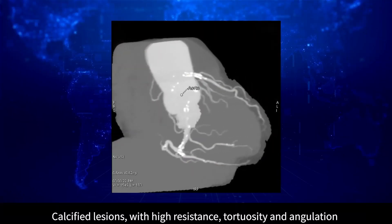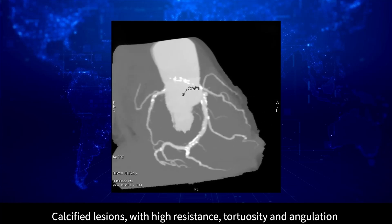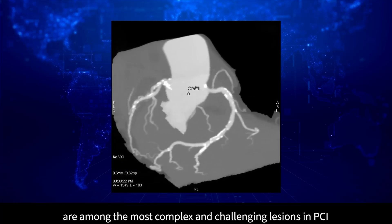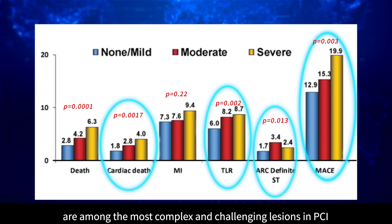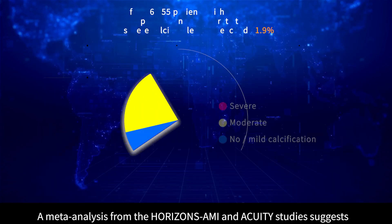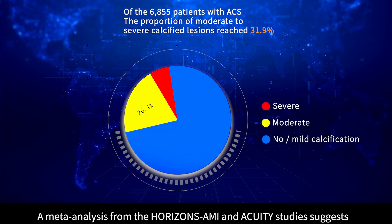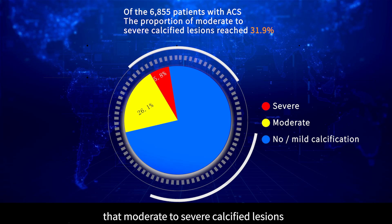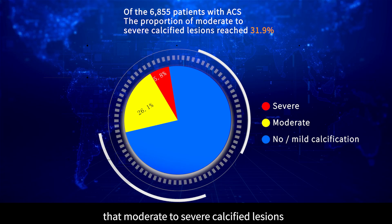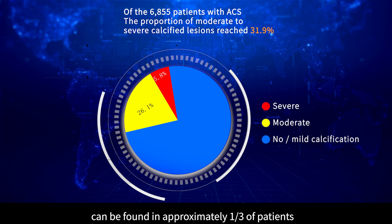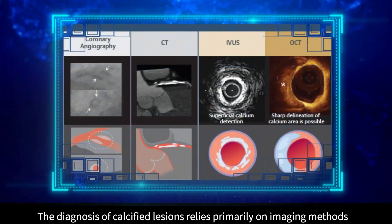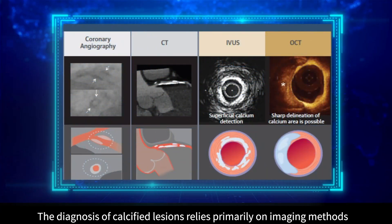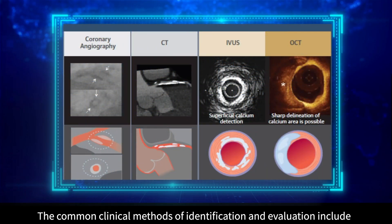Calcified lesions with high resistance, tortuosity, and angulation are among the most complex and challenging lesions in PCI. A meta-analysis from the HORIZONS-AMI and ACUITY studies suggests that moderate to severe calcified lesions can be found in approximately one-third of patients. The diagnosis of calcified lesions relies primarily on imaging methods.